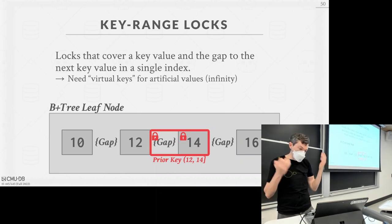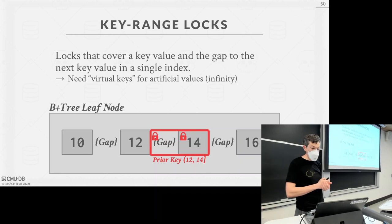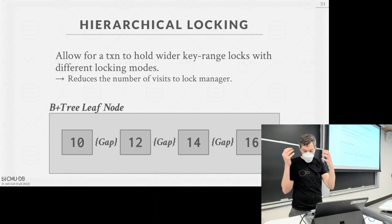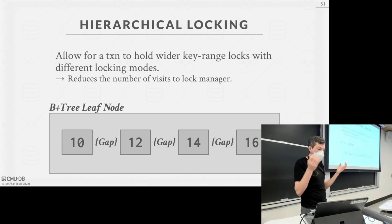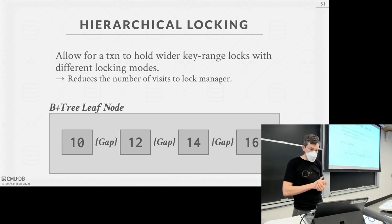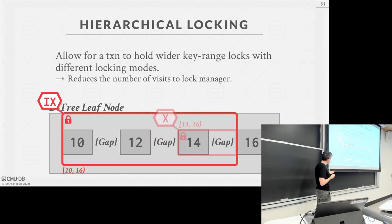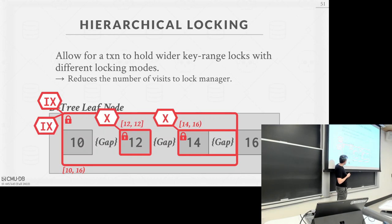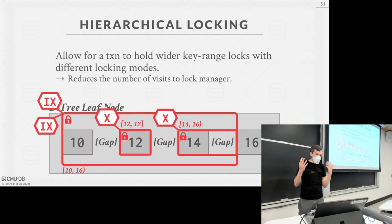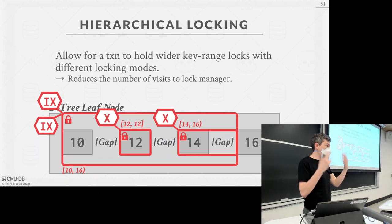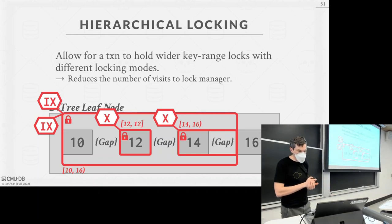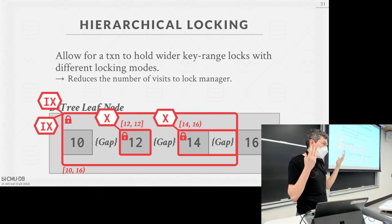We can combine all of this with the hierarchical locking technique from 2PL, taking intention locks on wider ranges and more fine-grained locks as we go down. We could take an intention-exclusive lock on a broader range, then an exclusive lock on a narrower range, and an exclusive lock on a single key. These intention locks serve as hints up above to say what's happening within these ranges of values.